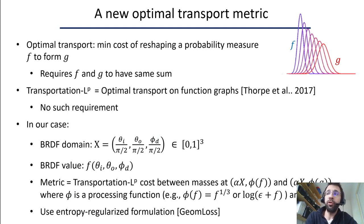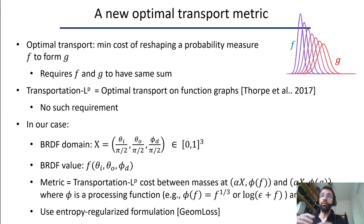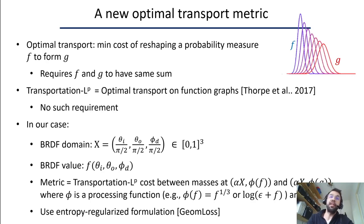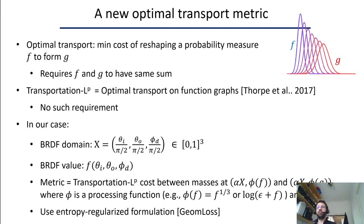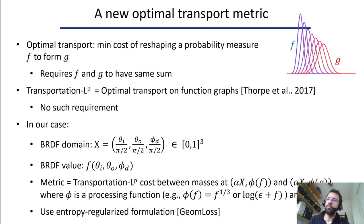We also introduce an optimal transport metric between BRDFs. Optimal transport provides a metric between two probability distributions by thinking of them as piles of sand to be moved at minimum cost. Standard optimal transport only works when two functions have the same integral value, which is not the case for BRDFs. So we use the transportation LP cost introduced by Torp and colleagues, which allows comparing arbitrary positive functions by computing an optimal transportation cost between the graphs of the functions. We also introduce a related kernel-based metric. Please refer to the paper for more details.